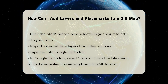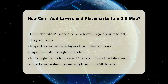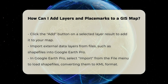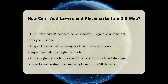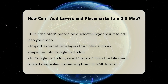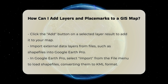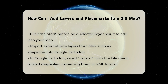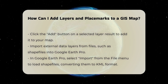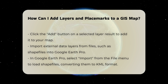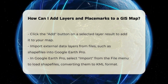Importing Layers: If you have external data, you can import layers from files. For instance, you can load shapefiles into Google Earth Pro by selecting Import from the File menu and choosing the shapefile. This data will then be converted to KML format and appear in Google Earth under the Places panel.